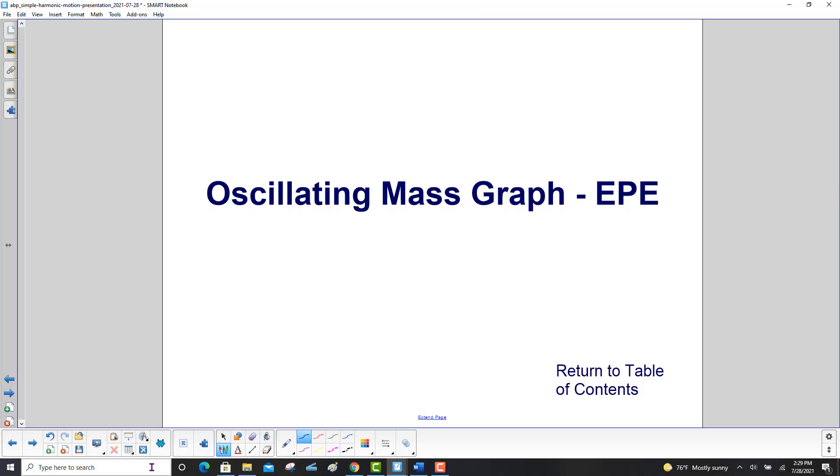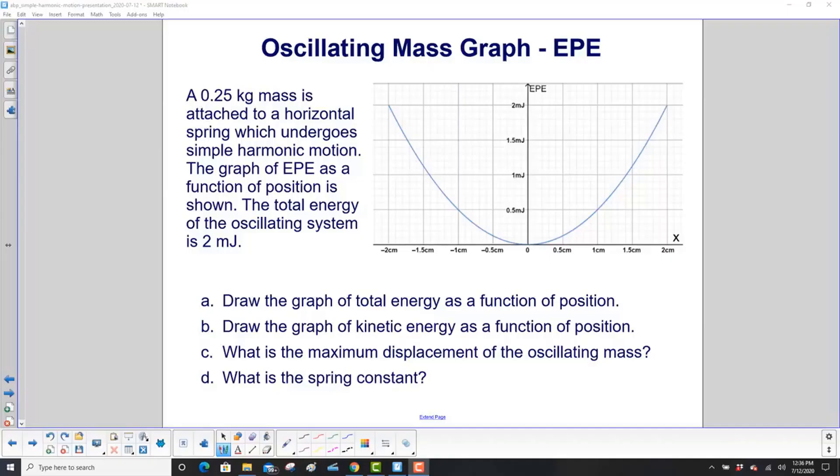Oscillating Mass Graph - Elastic Potential Energy. A 0.25 kilogram mass is attached to a horizontal spring which undergoes simple harmonic motion. The graph of EPE as a function of position is shown.